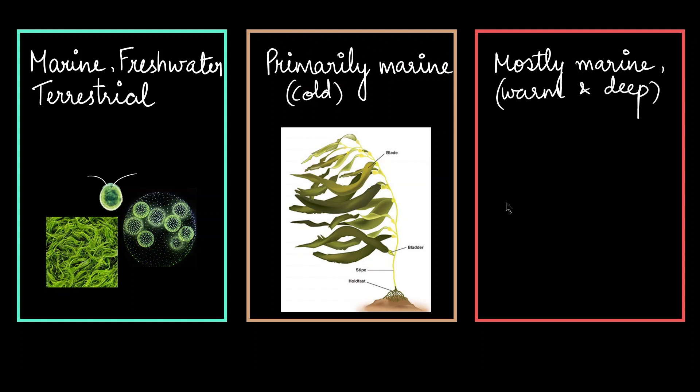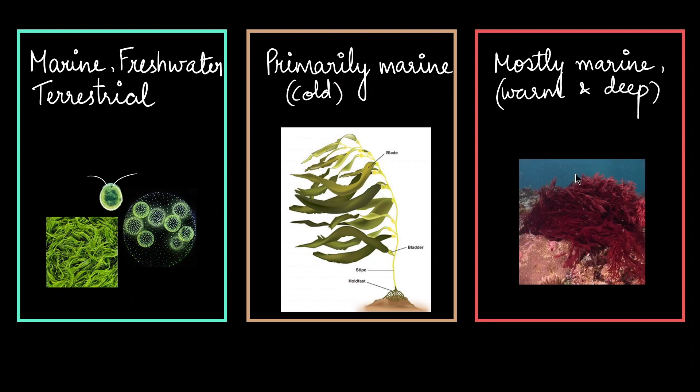Red algae also live in the sea but they prefer warm and deep waters. This is a common type of red algae. They also have more complex body organization compared to the other two groups.